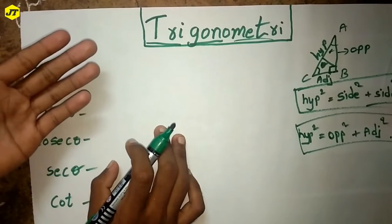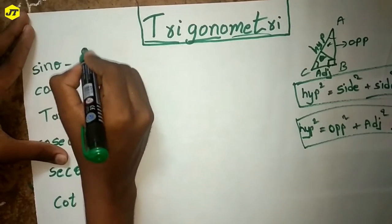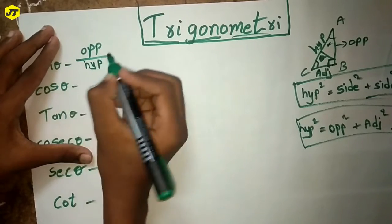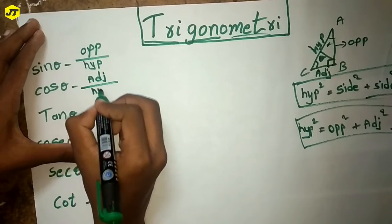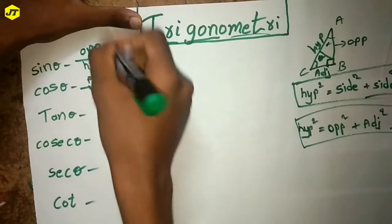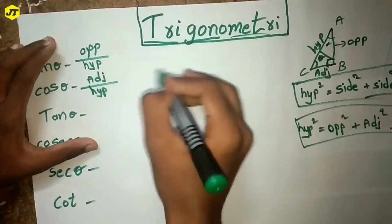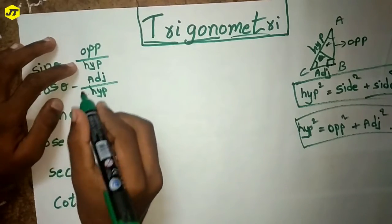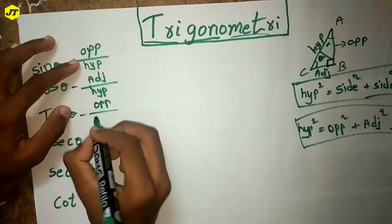Now let's see the trigonometric ratios. Sin theta equals opposite by hypotenuse. Cos theta equals adjacent by hypotenuse. Tan theta — we just divide those two: opposite by hypotenuse multiplied by hypotenuse by adjacent. The hypotenuses cancel and we get opposite by adjacent.